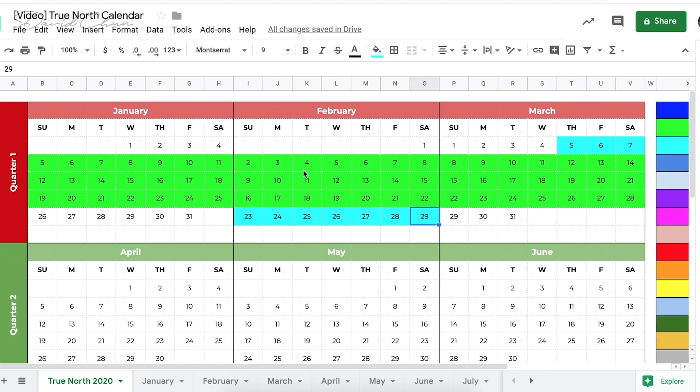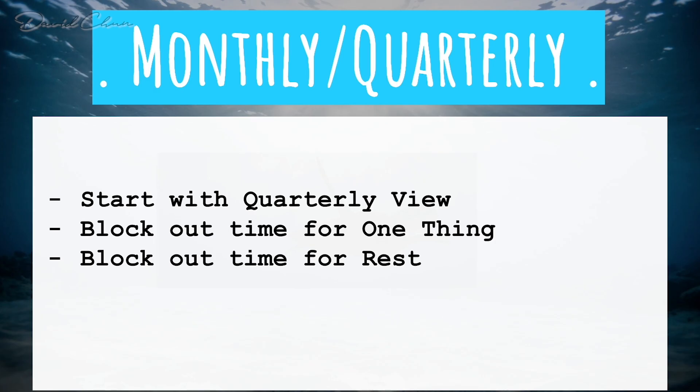This is the monthly, quarterly, and yearly view of the True North Calendar — pretty easy and self-explanatory. You start with the quarterly or yearly view, block out time for your one thing, and then block out time for rest periods. Now let's look at the weekly structure and break that monthly goal of 30 pages down into weeks.